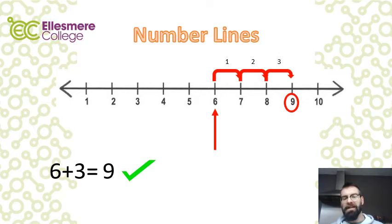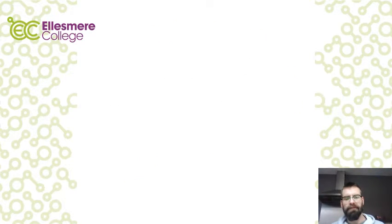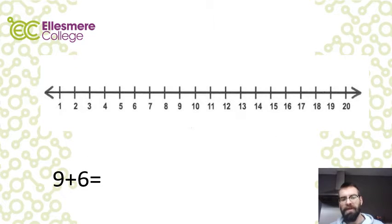If we're using numbers higher than ten we can also make our number line a bit longer. In this problem we've got nine add six. We can probably guess that the answer is going to be higher than ten, so we're going to use a longer number line. This one's from one to twenty. Again, the technique is the same.